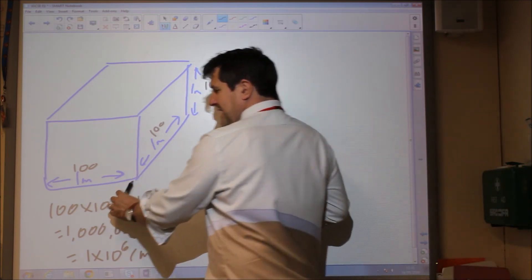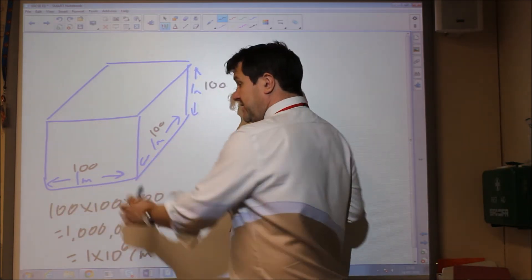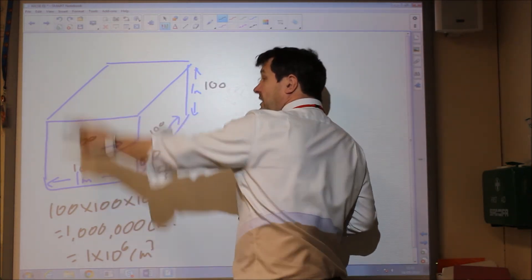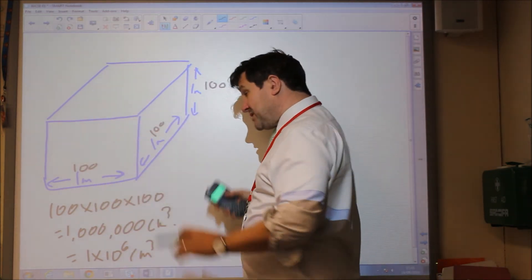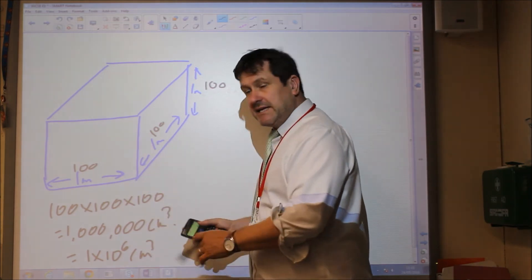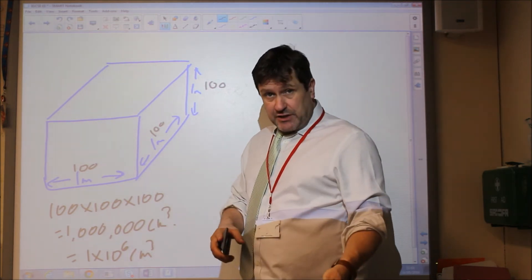So when you're working out in length, it's easier to convert the lengths, rather than then convert the whole volume at a later date. Because if you want to do that, you have to divide by a million in order to get it into metres cubed.